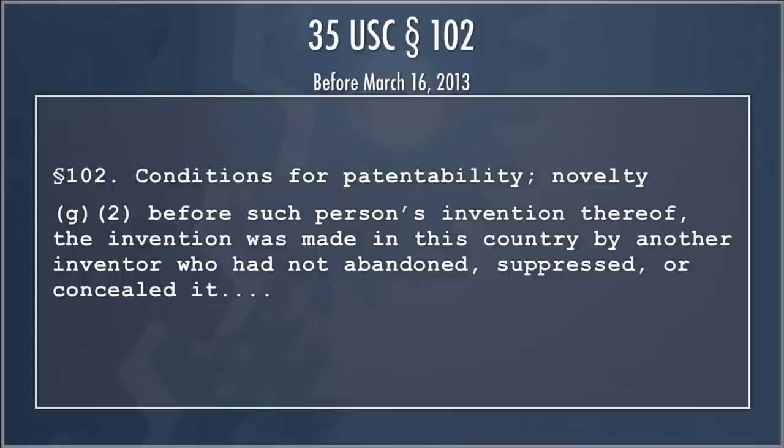This 102(g)(2) provision appears to largely swallow a lot of the 102(a) provisions, in part because there's no requirement of publication — it doesn't require that anybody know about this. It's also not entirely clear whether it requires anticipatory enablement. In practice, it's pretty rare to find this in the real world, because you'd have to find a case where someone was inventing, never disclosed their activity, and never did anything about it — without a publication that would more likely create a prior publication bar instead.